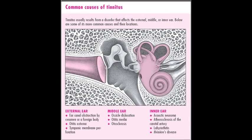Tinnitus is a sensation of ringing in the ears. The differential diagnosis of tinnitus can be broadly separated as subjective or objective ringing. On history, ask about the characteristics of the sound. Is it constant or intermittent? What is the duration? Is it uni- or bilateral? Is there a history of head trauma, medications, the presence or absence of hearing loss, vertigo, and other neurological signs or symptoms?